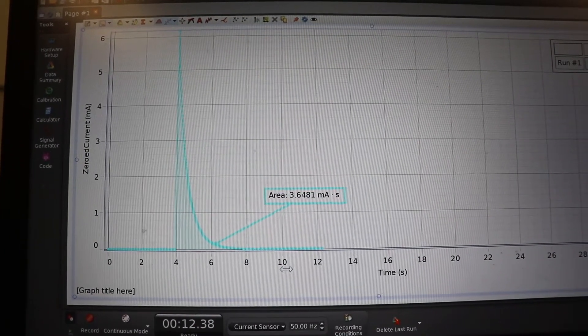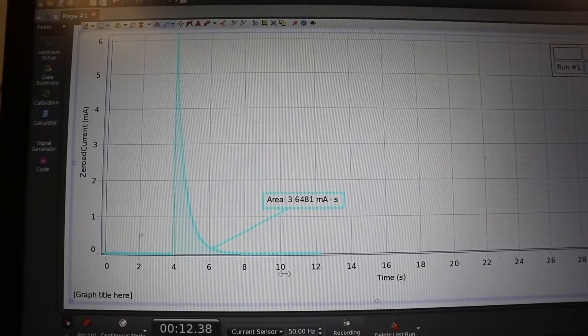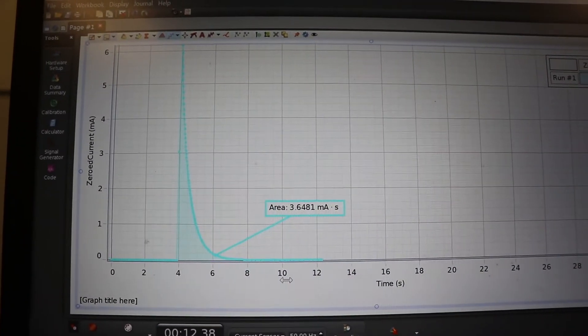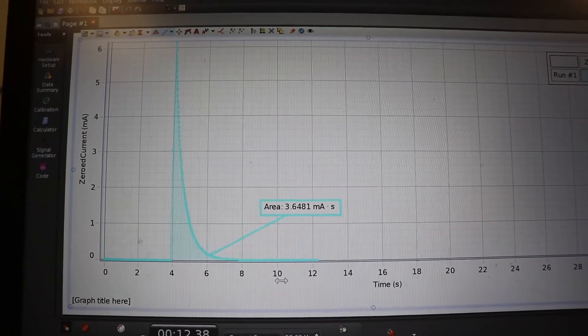Because an amp is a coulomb per second, and a second times a coulomb per second is a coulomb. Okay, so that's how you get the integration. It's a fantastic little program.